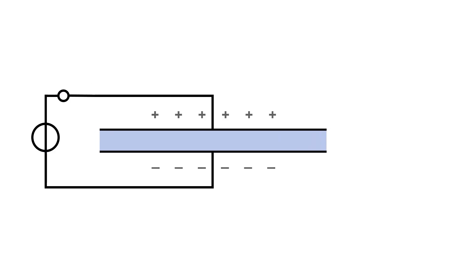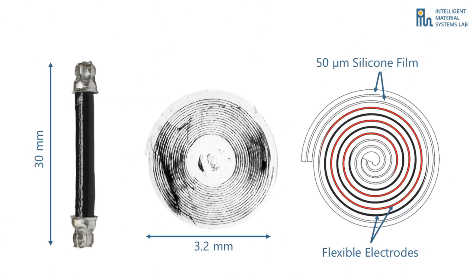You all know how DEAs work. In our system we use a rolled variant. It's built from 50 µm thick WACKER elastosil, which is screen printed with carbon black based electrodes and then tightly rolled.